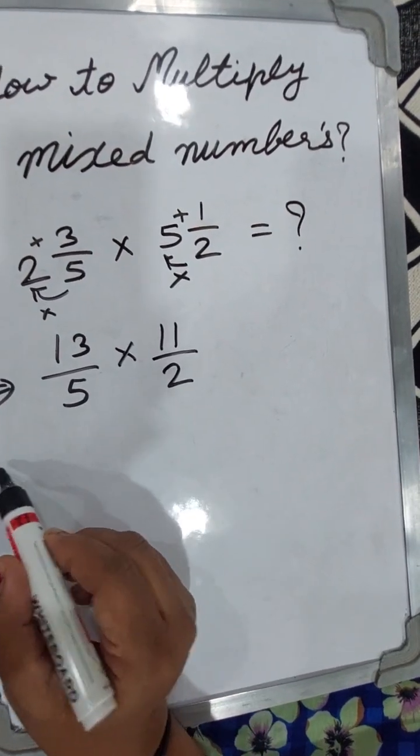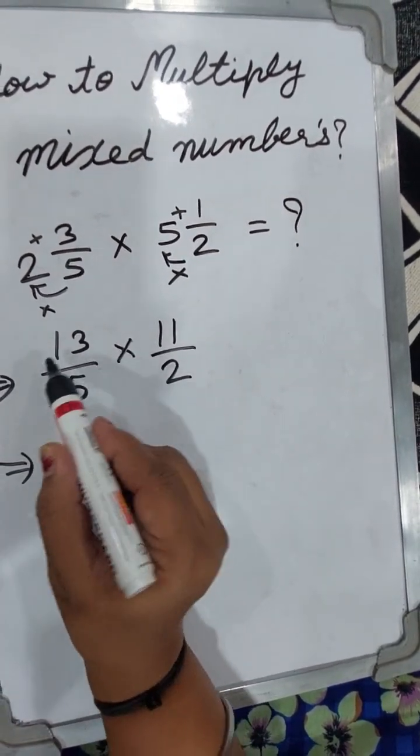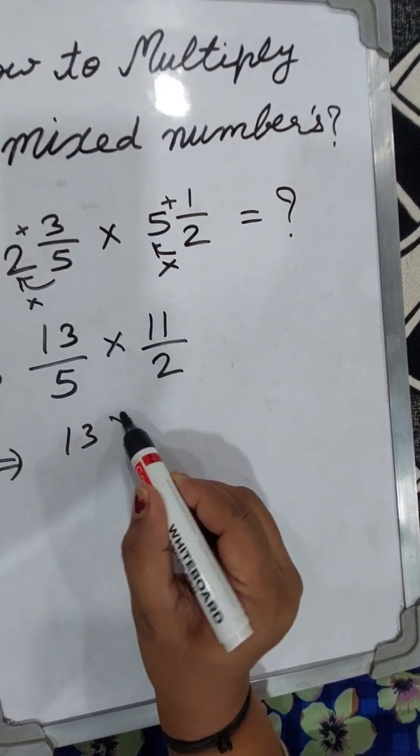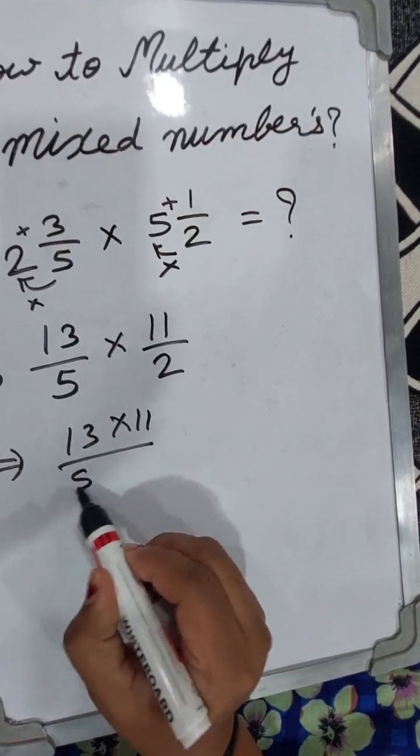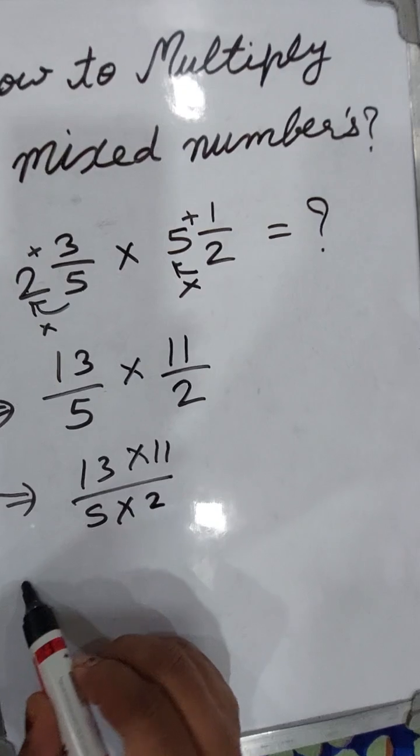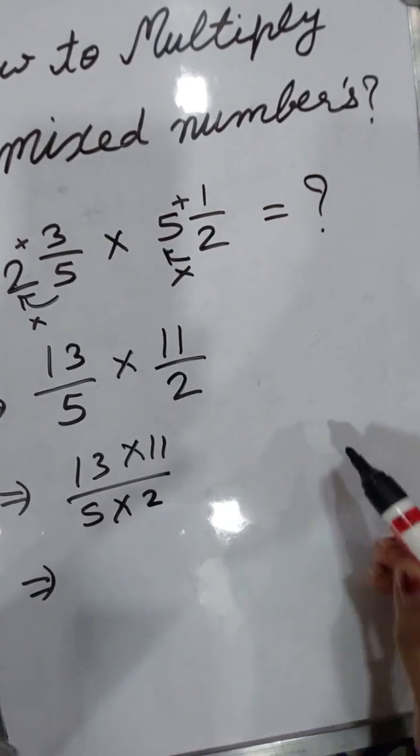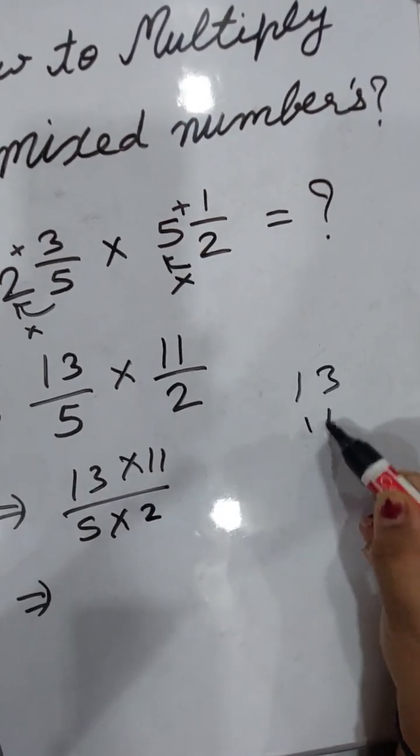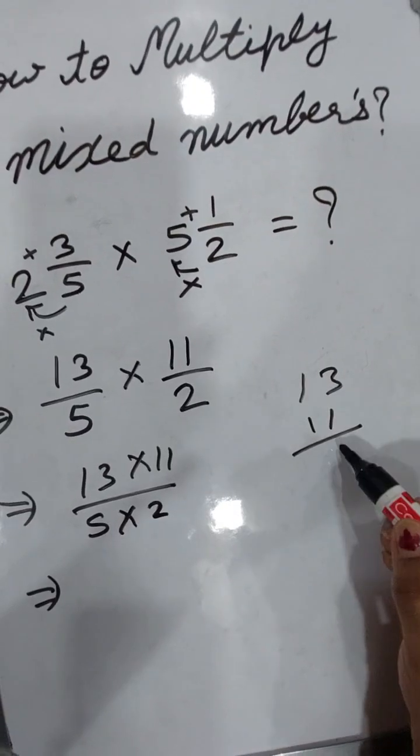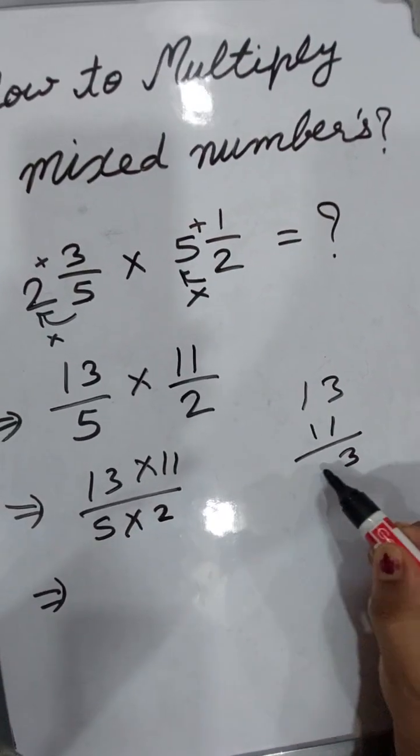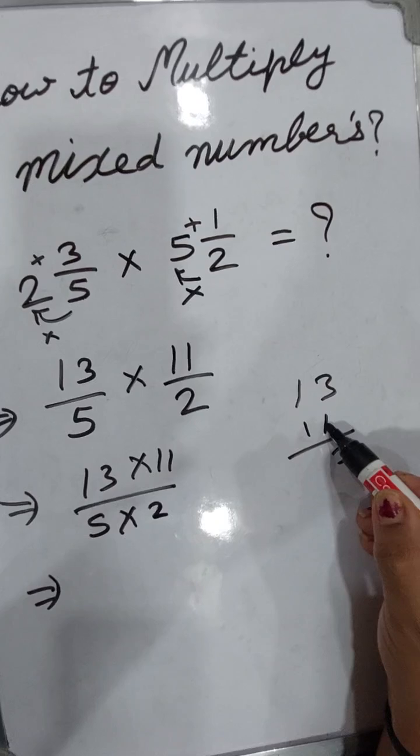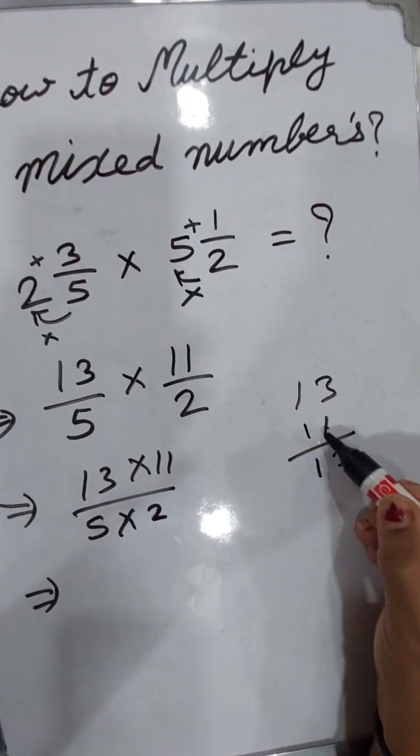Now multiply these numbers. Multiply 13 times 11 and 5 times 2. For 13 times 11, first multiply by 1: 1 times 3 equals 3, 1 times 1 equals 1.